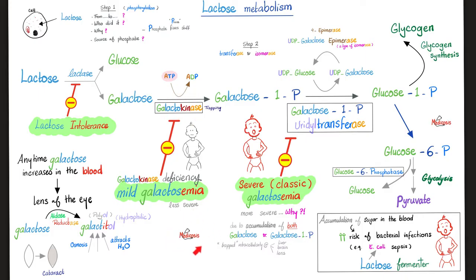Medicine makes so much sense once you understand what you're talking about. Whether you're missing galactokinase, uridyl transferase, or lactase, what's piling up in your body is sugar. Sugar is osmotically active — especially galactitol, the sugar alcohol — it attracts water, giving you cataracts. Since galactitol comes from galactose, you can see cataracts in galactokinase deficiency and in classic galactosemia, but rarely with isolated lactase deficiency.